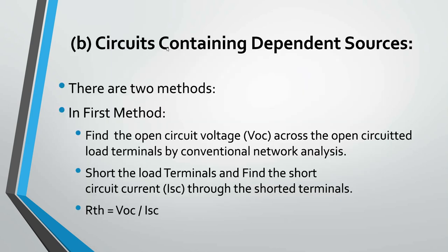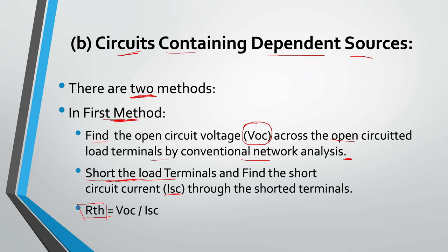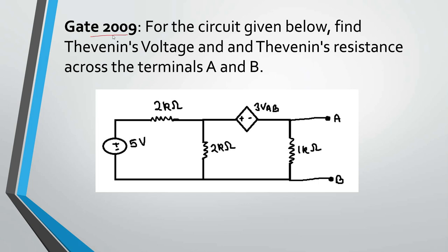Next we move on to the second category — circuits containing dependent sources. In this category there are two methods. In the first method, we find the open-circuit voltage VOC across the open-circuited load terminals by conventional network analysis. Then we find ISC, the short-circuit current when the load terminals are shorted. The equivalent Thevenin resistance is then RTH equals VOC divided by ISC. Let's take this example from GATE 2009.